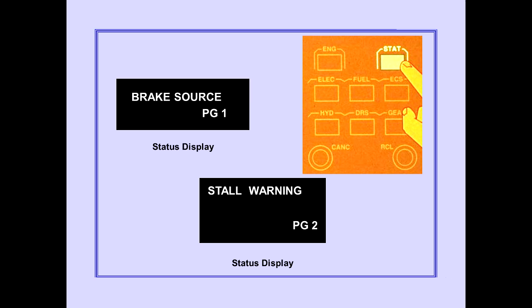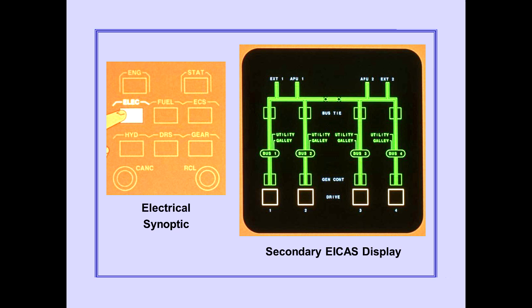Pushing the status display switch on the ICAST display select panel displays the messages on page 2. Pushing the electrical synoptic switch on the ICAST display select panel displays the electrical synoptic on the secondary ICAST display. The display provides real-time information about the status of the various buses, relays, and power sources.